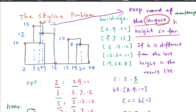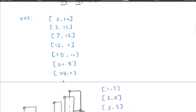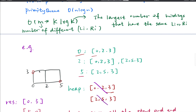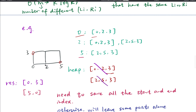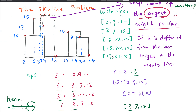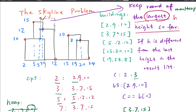Sometimes they have the same index. For example, with buildings [0,2,3] and [2,5,3], they share the same index 2. So we cannot simply map an integer to an integer array because they may have the same index — we should use a list here.